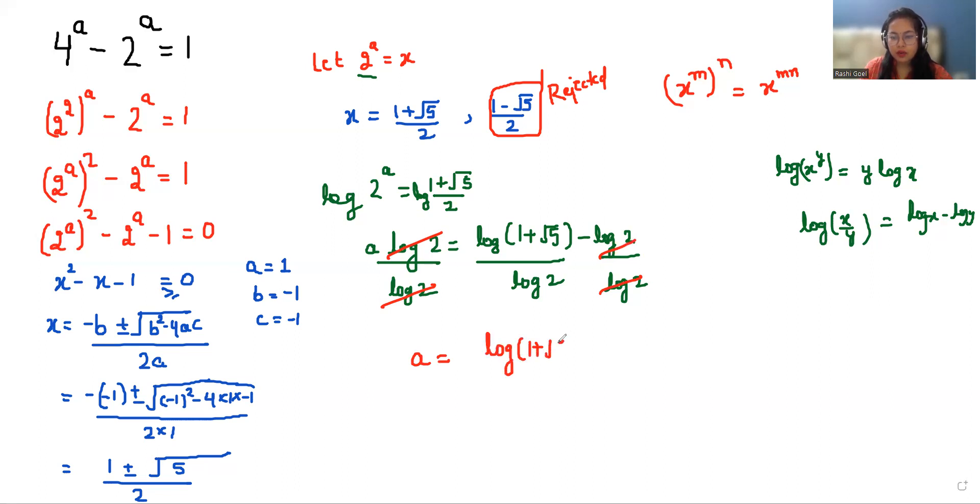So the value of a is log(1 + √5)/log(2) - 1.